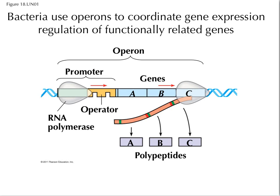In prokaryotes, like bacteria particularly, bacteria use what we call operons for coordinating gene expression. There are three genes in this picture — gene A, B, and C — and each codes for a different polypeptide. Those polypeptides may be functional proteins on their own or subunits that come together. Almost always A, B, and C are going to be doing some function together, like processing lactose, the sugar. Bacteria have a promoter region where the RNA polymerase sits.